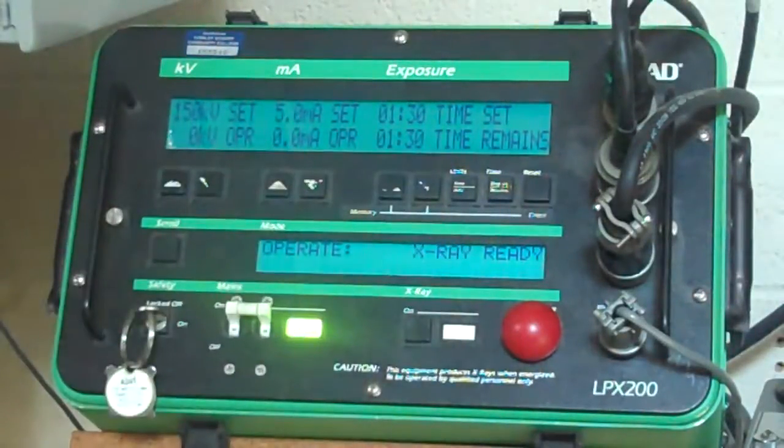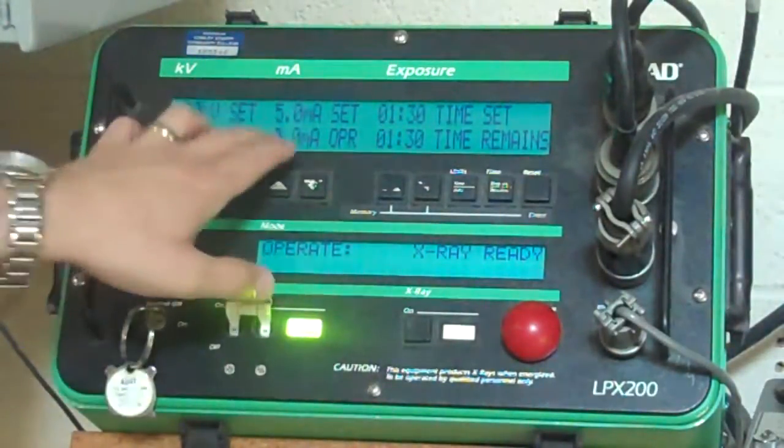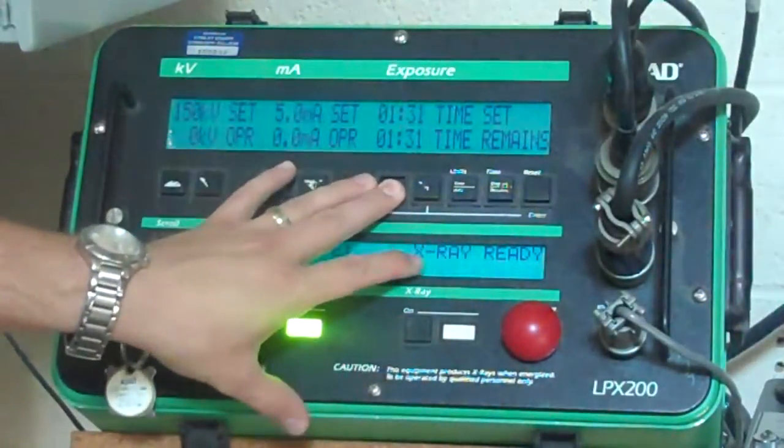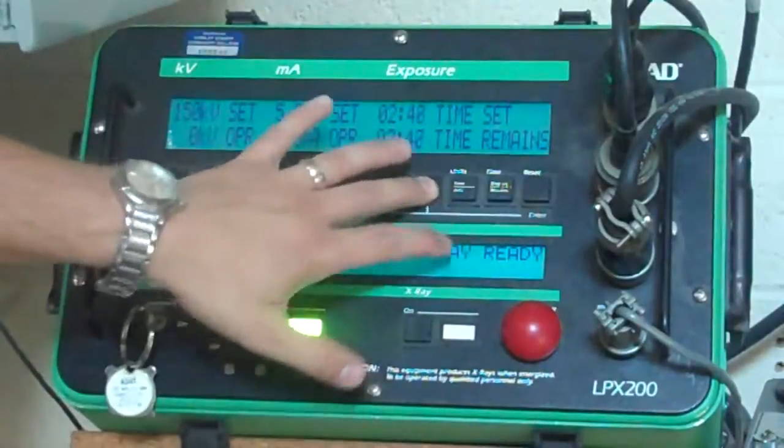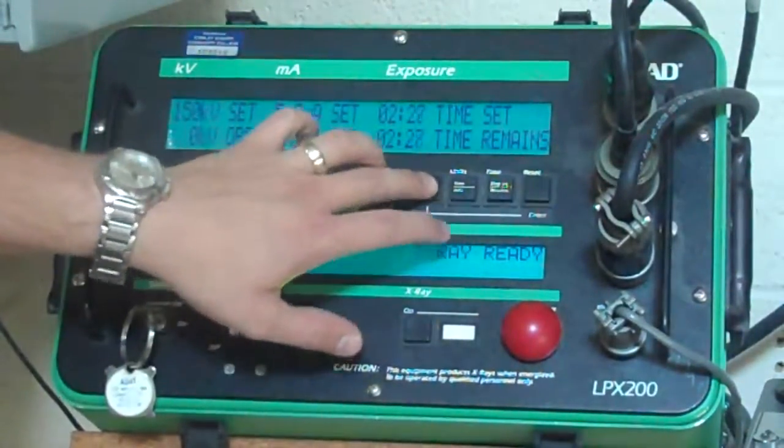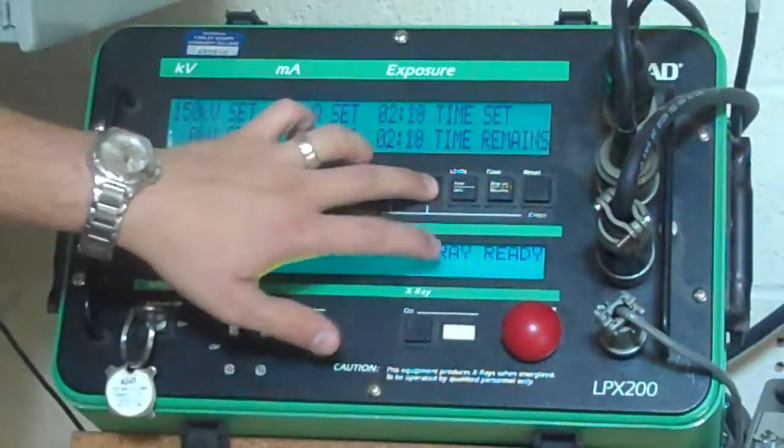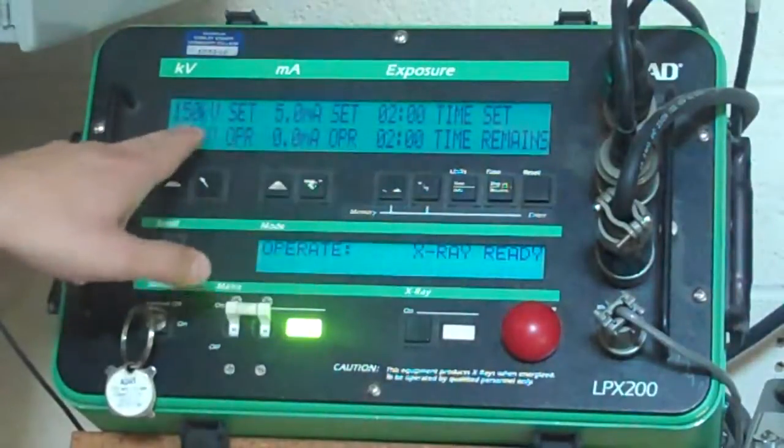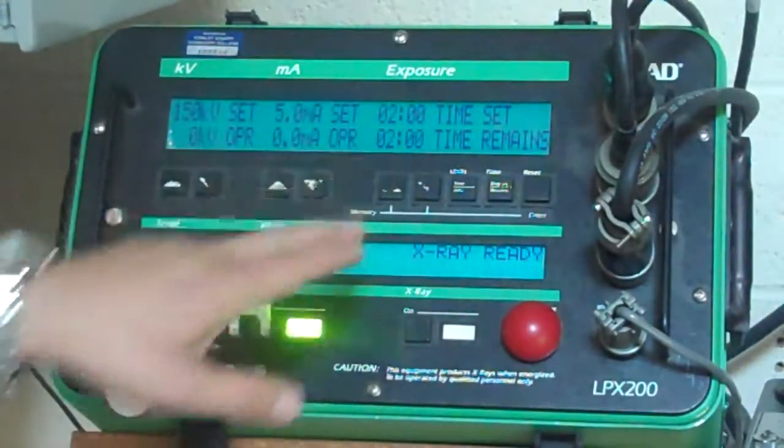Here, we're just going to say a good round number to start, 150 kV, 5MA. A minute and 30 is probably a little short. We'll run that up maybe about two minutes or so. So I'm going to close the door. And when I close the door, all I'm going to do is hit go. I'm changing my exposure time right now. 150 kV, 5MA, two minutes. That's how much time remains.